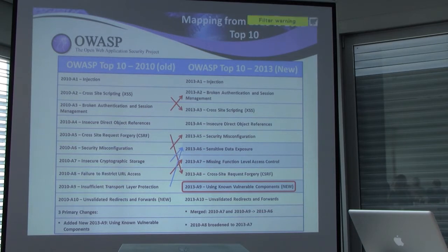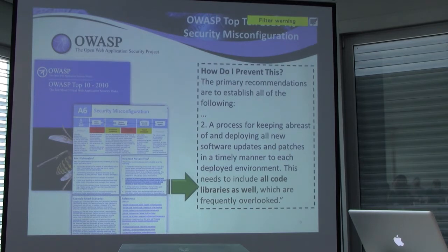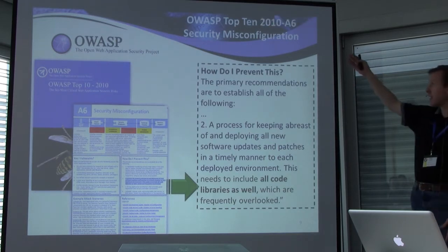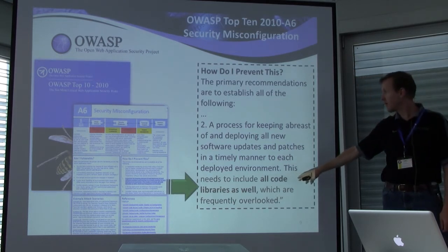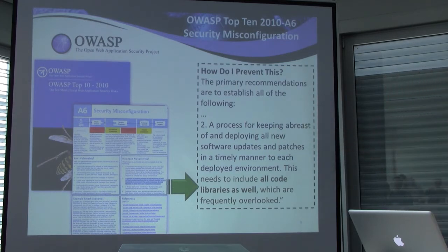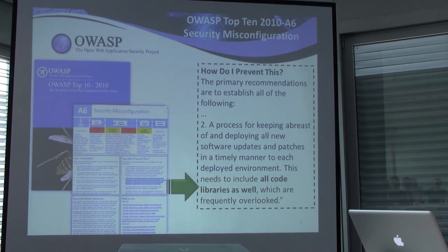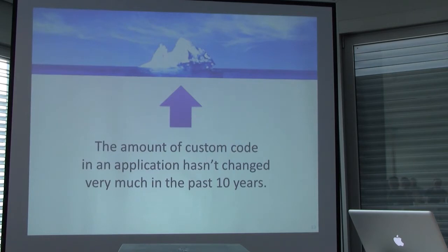The new item we added was A9. Way back — three years ago — in A6, security misconfiguration, I had one sentence in bold that said when you want to secure your platform, one of the things you have to do is make sure all your libraries are up to date. Nobody really noticed. Development has been evolving rapidly, and the amount of code we depend on to build new applications has exploded. We're standing on the shoulders of giants, building amazing applications quickly because of powerful frameworks — but there's a cost to that.